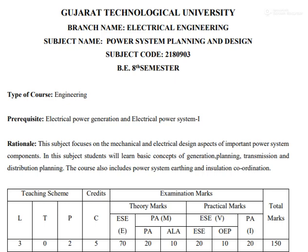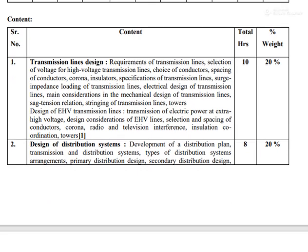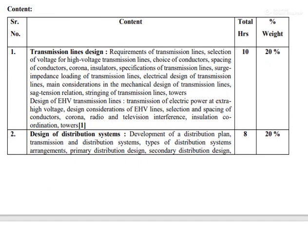Let us start with the basic introduction of this subject. Our first unit is based on transmission line design. We will study various parameters such as the requirements of a transmission line, how to differentiate transmission lines based on voltage level, selection of voltage level for the transmission line, as well as conductor type selection, and the spacing between conductors along with various effects on the power system.